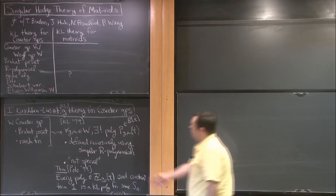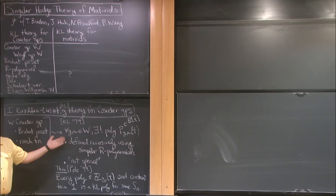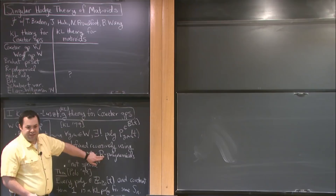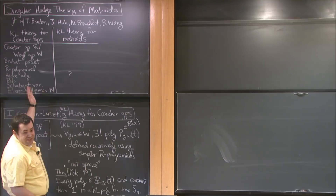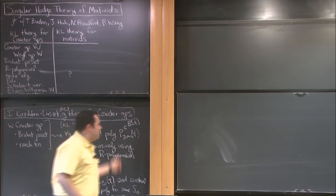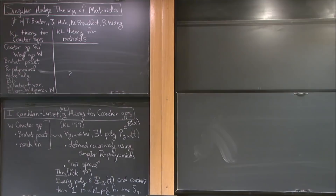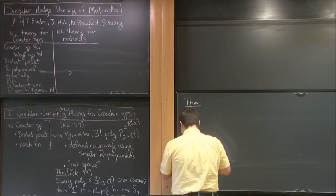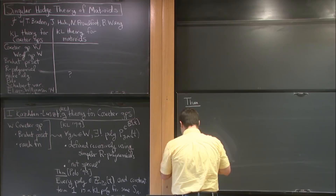These polynomials are defined in terms of a nasty recursion using R-polynomials — a polynomial whose name is R — and all you need is two elements of the Coxeter group. The next theorem, which is the year after they were defined by the same people, gives a geometric interpretation: for Weyl groups of semisimple Lie algebras, not just any Coxeter group, we have geometry.